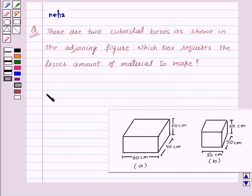Before proceeding for the solution, let's recall the formula of total surface area of cuboid and that is equal to 2(lb + bh + hl), where L is the length of the cuboid, B is the width of the cuboid, and H is height.